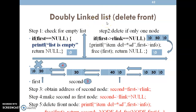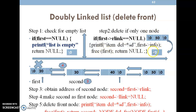Deleting an element from the front end: Case 1 — if first equals null, the list is empty, return null. Case 2 — if the list contains only one node: check if first pointer right link equals null, meaning only one node exists. Then print the deleted item (first pointer info, which is 50), free first, and return null since nothing is left in the list.